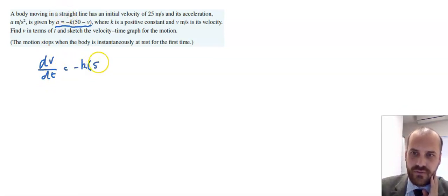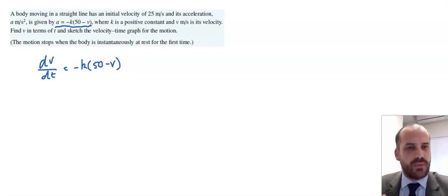We know that acceleration is the rate of change of velocity with respect to time. And we have this function here, negative k(50 minus v). And we can start working from there.